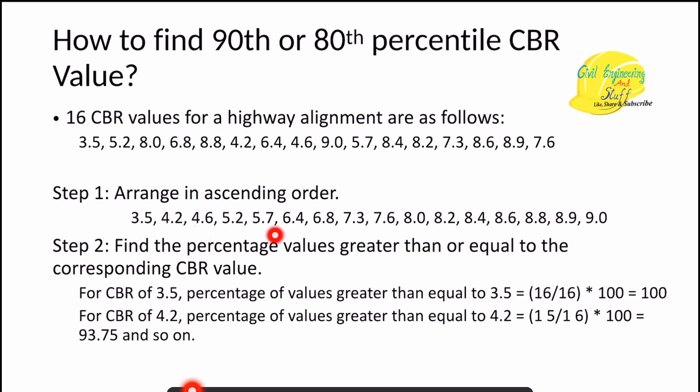After arranging in ascending order, we find the percentage of values greater than or equal to each corresponding CBR value. The 90th percentile CBR is the value at which all remaining samples are equal to or greater than the design value. For example, for the smallest CBR of 3.5 with 16 samples total, 16/16 × 100 = 100%. For CBR of 4.2, the count of values greater than or equal to 4.2 is 15, so 15/16 × 100 = 93.75%.